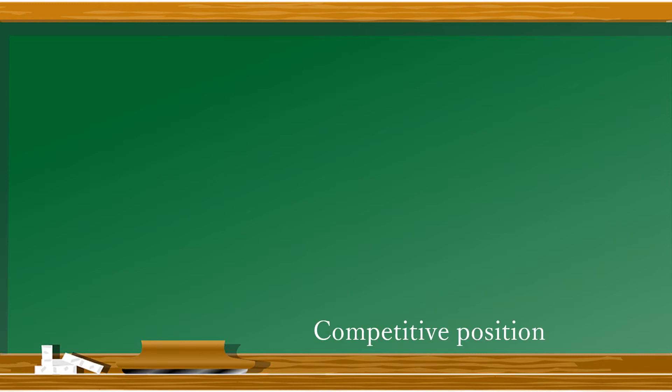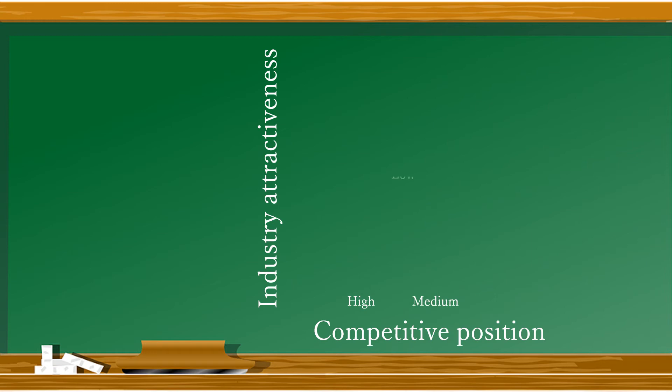And for the other criteria, let's look at the big picture: how attractive is the industry? Meaning, does it have the potential to grow? Are there other macro factors presenting complications? Since we have three squares on each side, let's break those criteria up into high, medium, and low scores, and we're going to do the same for the other criteria: low, medium, and high.